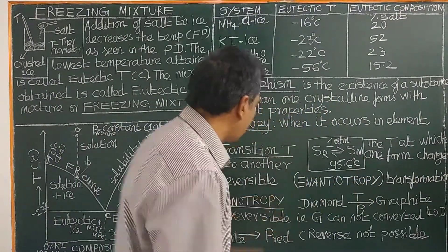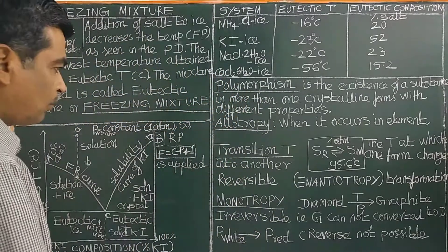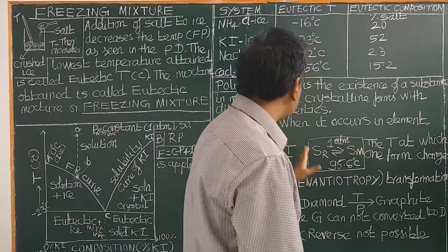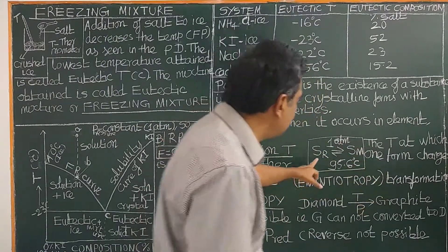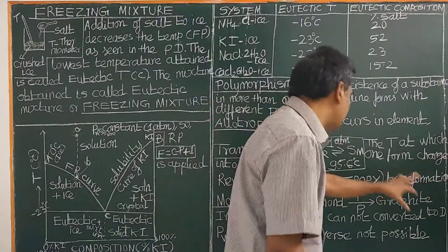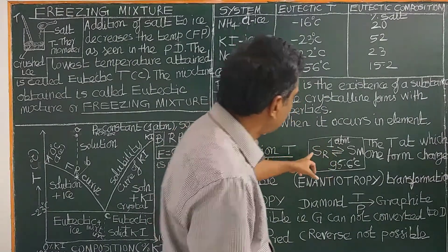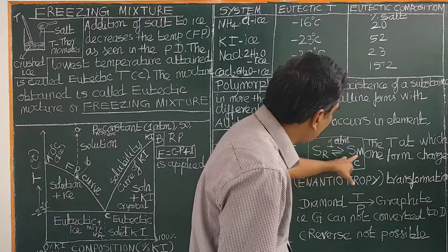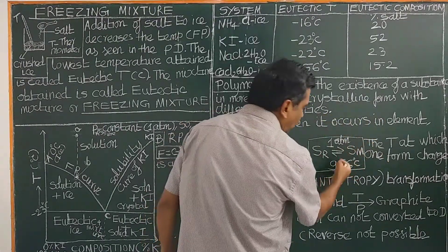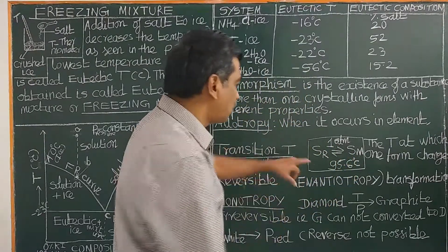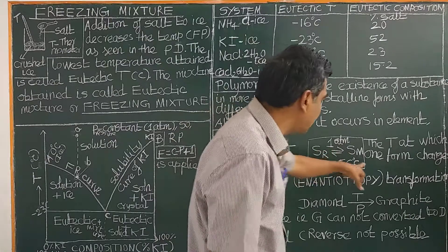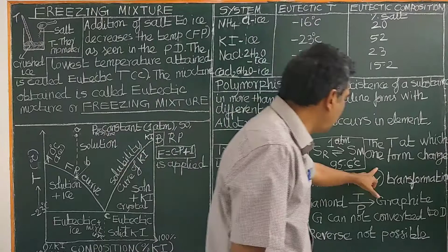Next we will see enantiotropy and monotropy — they are opposites. What is enantiotropy? If the allotropic or polymorphic transformation process is reversible, then it is called enantiotropy. On heating to 95.5 degrees Celsius, sulfur rhombic is converted into sulfur monoclinic. On cooling back to 95.6 degrees Celsius at one atmospheric pressure, it is converted back to sulfur rhombic. Since the process is reversible, it is called enantiotropy.